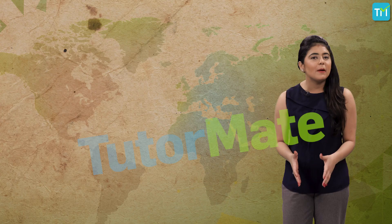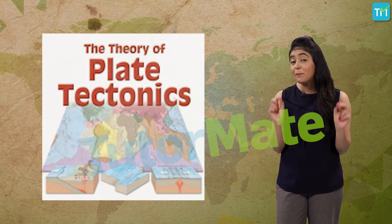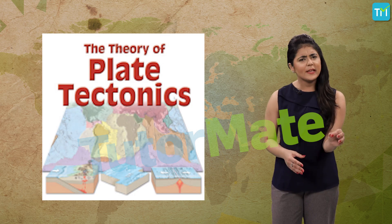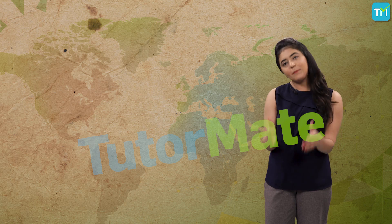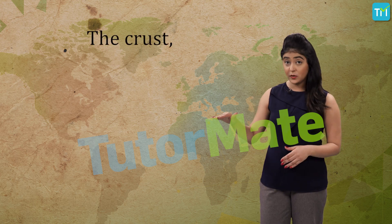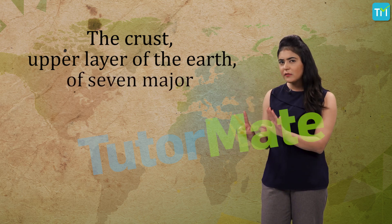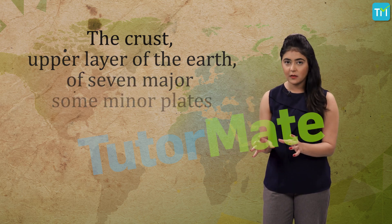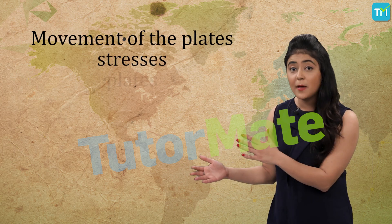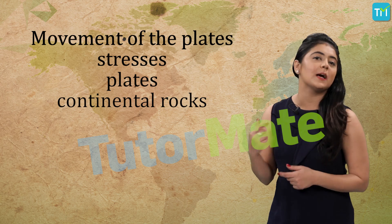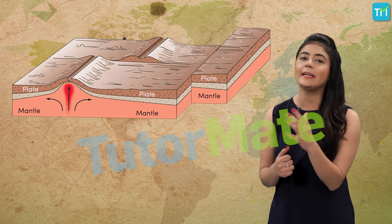This has been explained by earth scientists, who have worked on theories like the theory of plate tectonics, which is based on certain evidences. According to the theory of plate tectonics, the crust, which is the upper layer of the earth, has been formed out of seven major and some minor plates. The movement of these plates results in building up of stresses within the plates and the continental rocks above, leading to folding, faulting and volcanic activity.